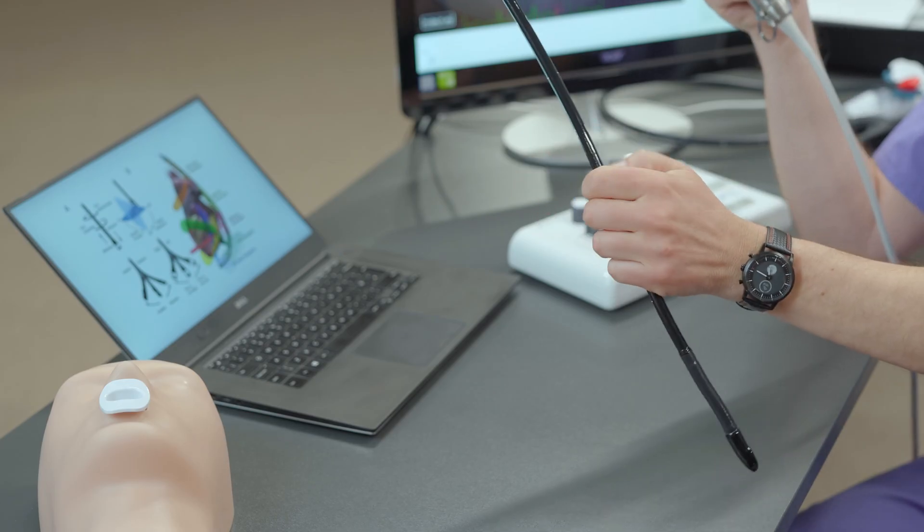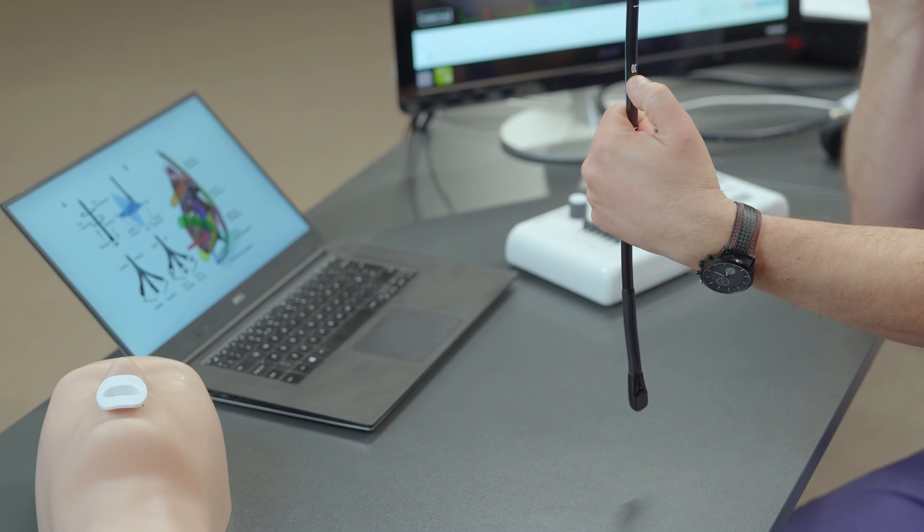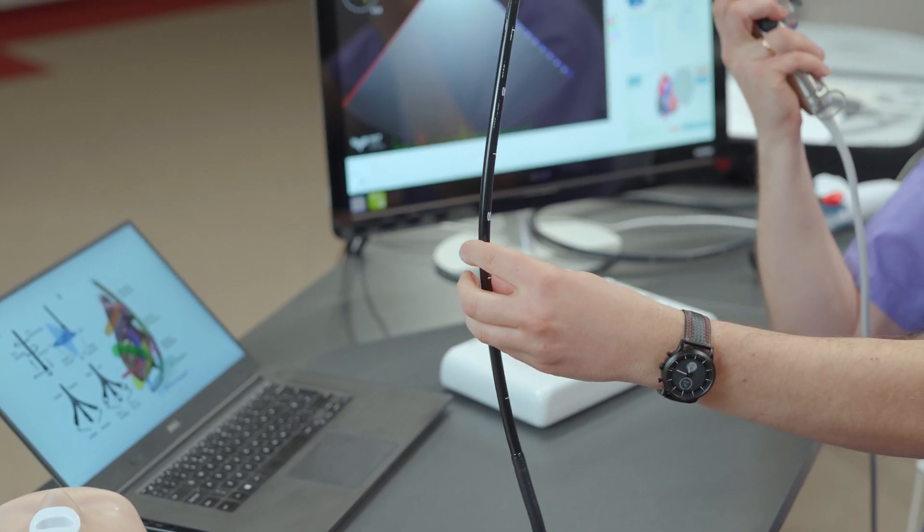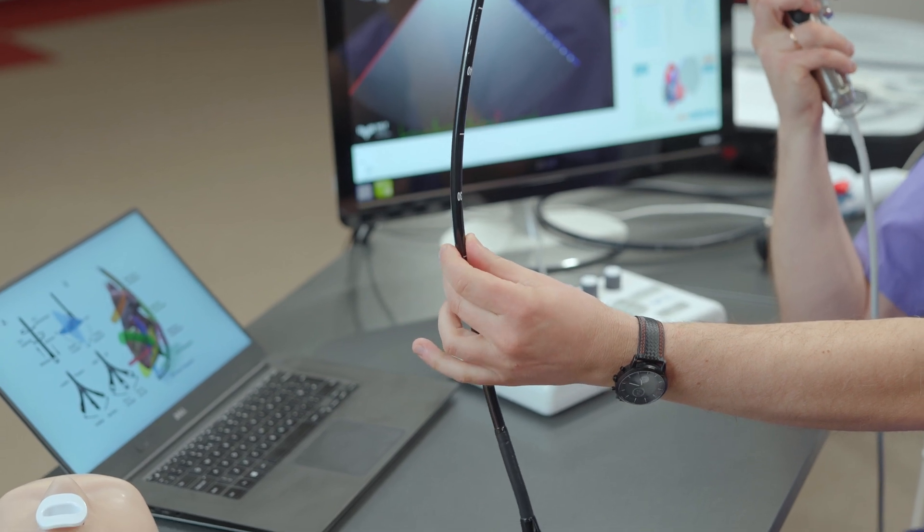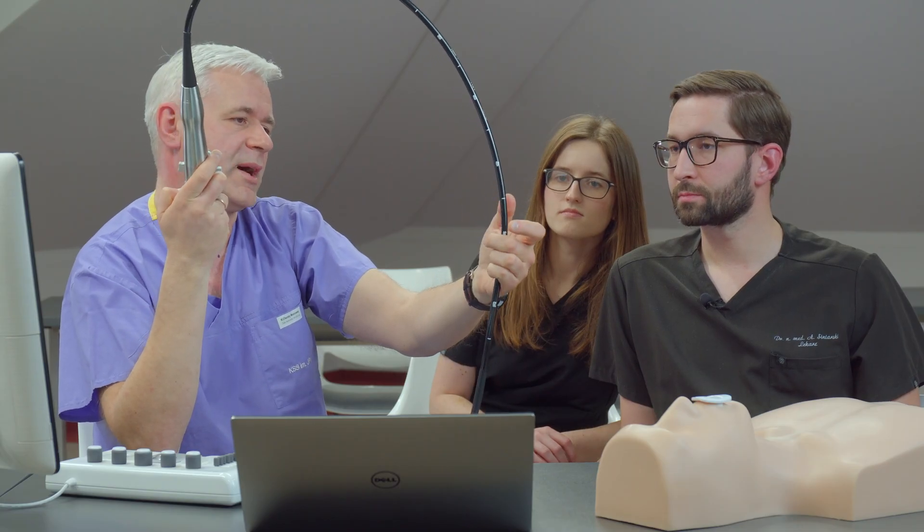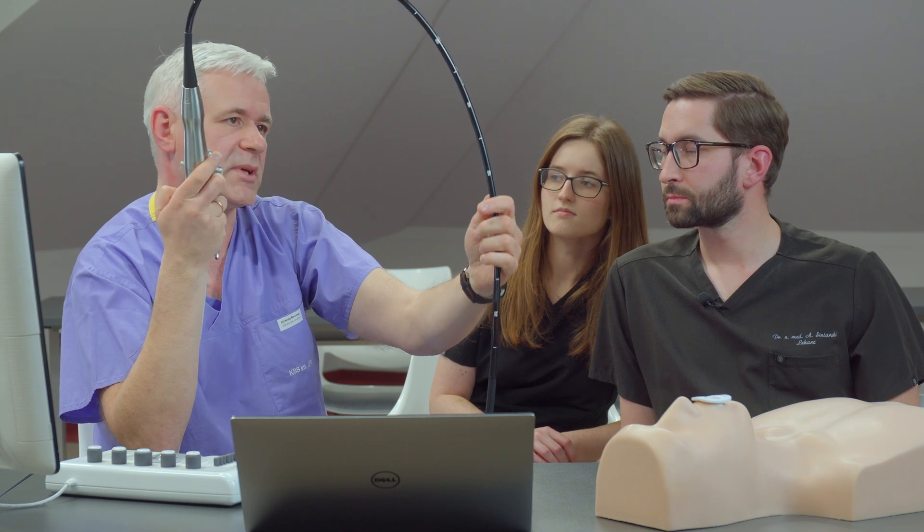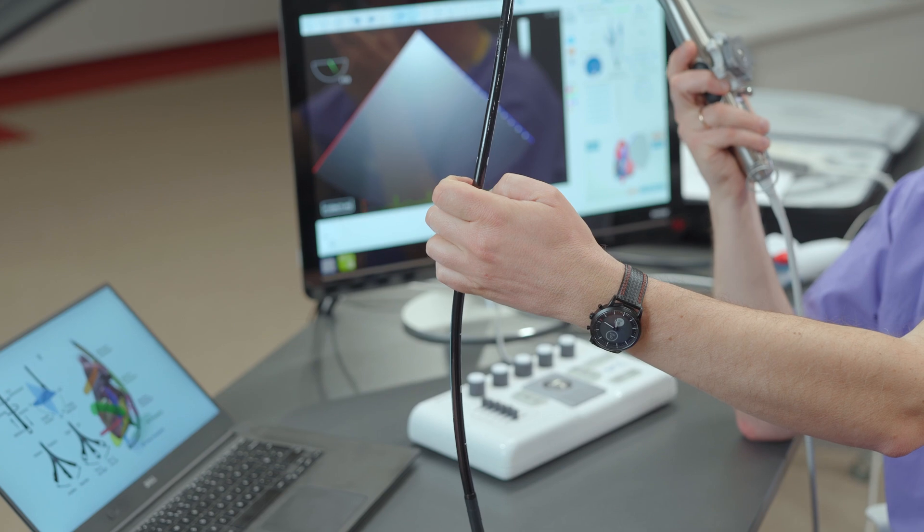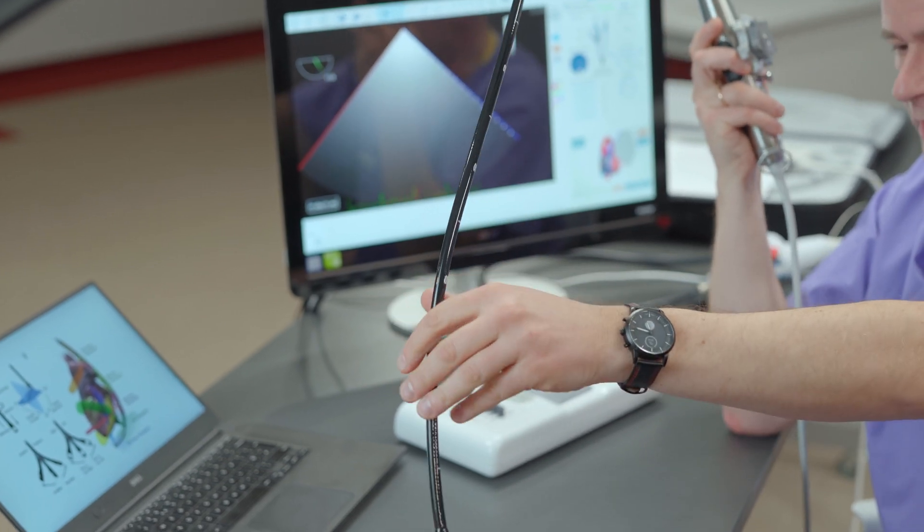You can control it by looking at those numbers on the shaft - 20, 30 centimeters. Usually the heart starts about 25 centimeters from the teeth. If you go to 35, 40, it's in the mid-esophagus. If you go to 40, 45, usually you are in the stomach. This is very helpful as well.